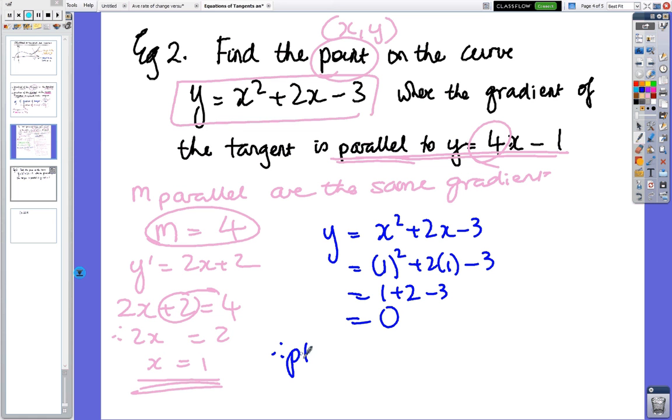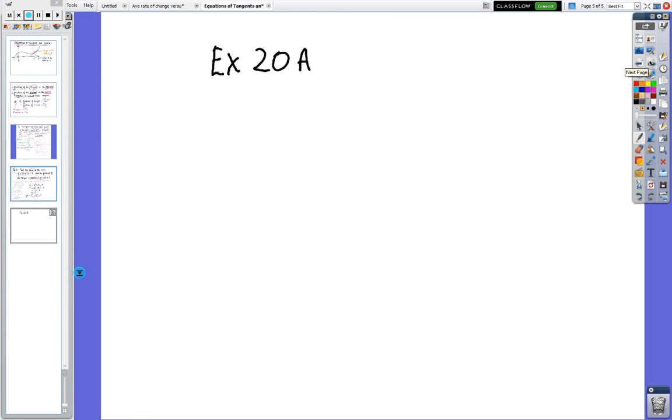So the point that we're looking for is 1, 0. So find the point on the curve that where the gradient is parallel and the answer is 1, 0. Copy that and come across. So there's the exercise. Exercise 20A. And you'll have plenty of practice. Thanks.